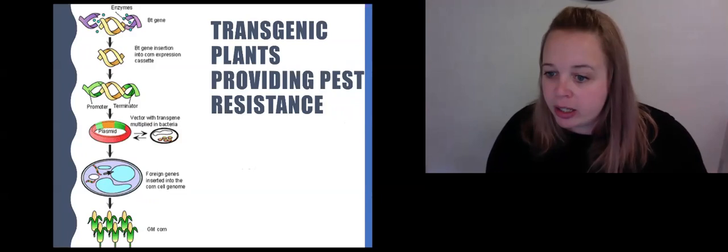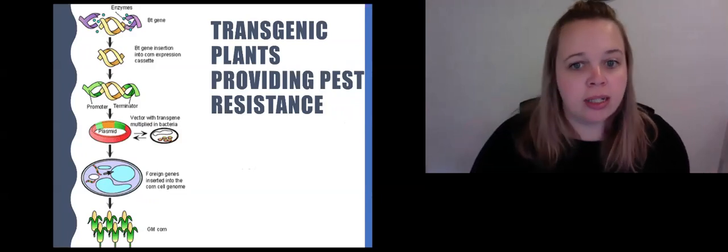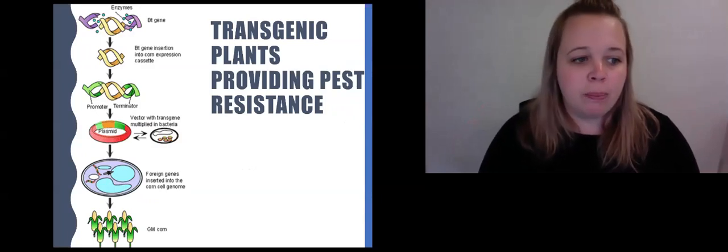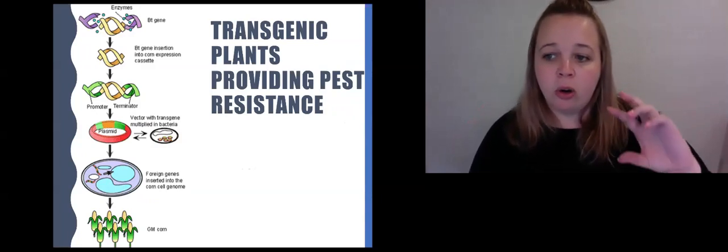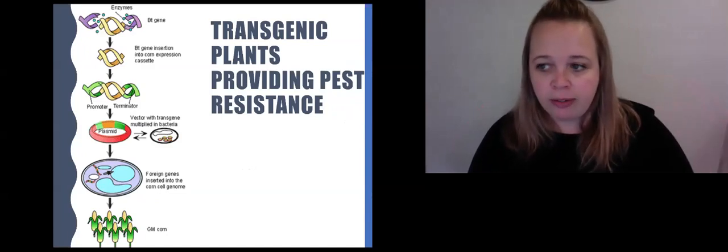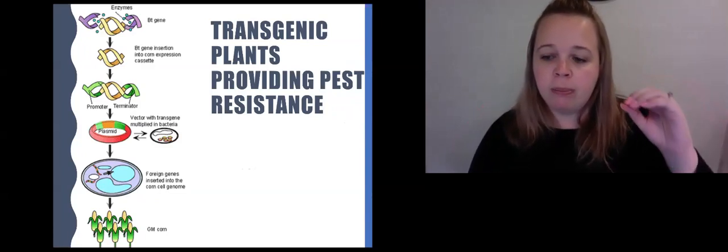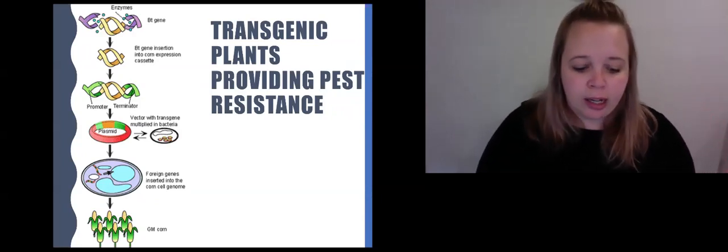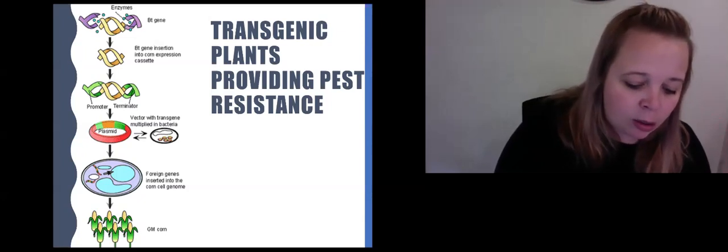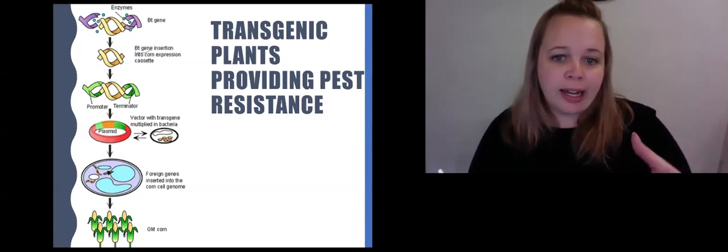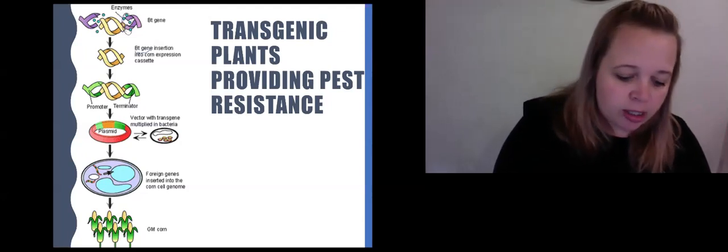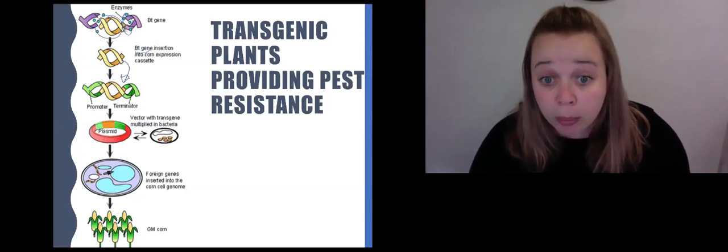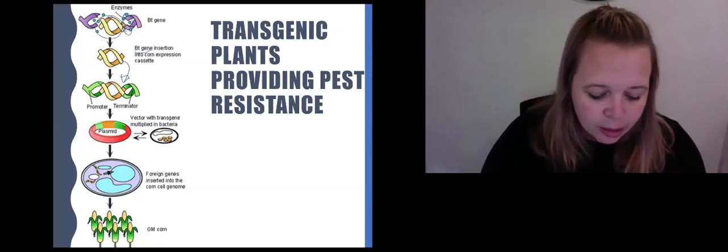So the next category is transgenic plants that provide pest resistance. It's all got to do with increasing crop productivity, but in particular, what pest resistance can we pass on to them? So this is a good example called BT corn. So BT gene, they take out. Here's your restriction enzyme cutting out this gene and we put it into a corn plant.